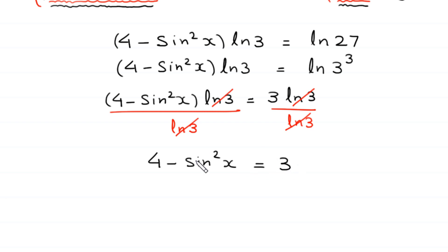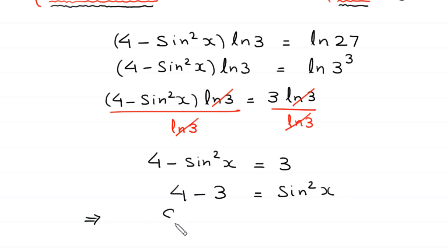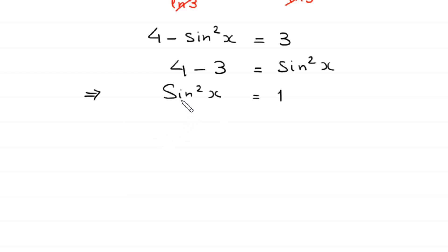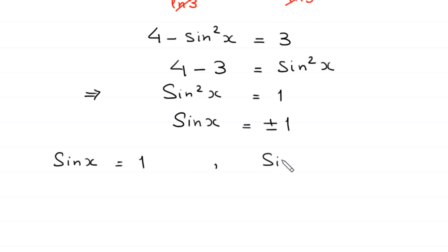Rearranging: 4 − 3 = sin²x, so sin²x = 1. Taking the square root of both sides, sin x = ±1, meaning sin x = 1 or sin x = −1.